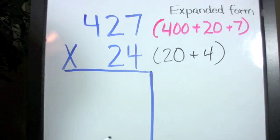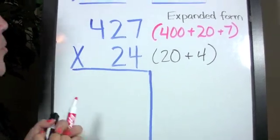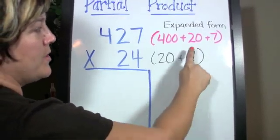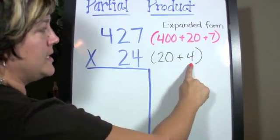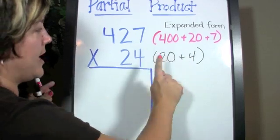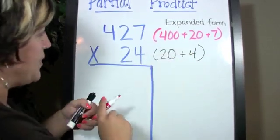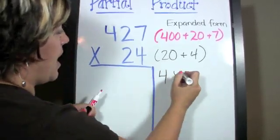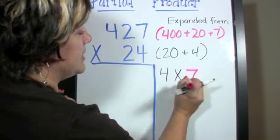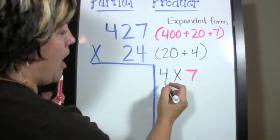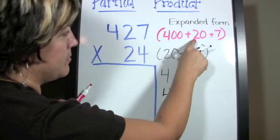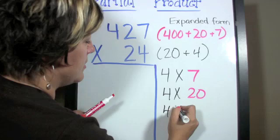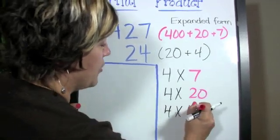This is where we use something called the distributive property, where I can say the 4 gets multiplied times the 7, times the 20, and times the 400. The same will happen with the 20. Now it looks like this: 4 times 7, 4 times 20, and 4 times 400.